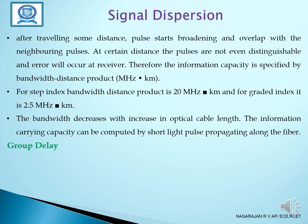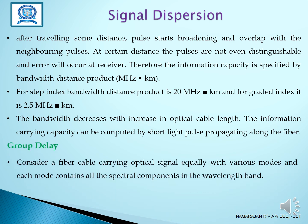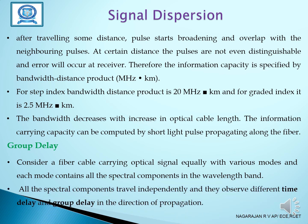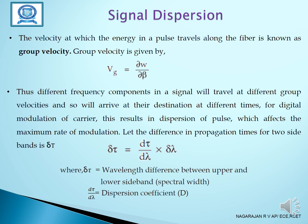Group delay: a fiber cable carrying an optical signal equally with various modes, where each mode contains all the spectral components in the wavelength band. All the spectral components travel independently and they experience different time delay and group delay in the direction of the pulse. The velocity at which the energy in a pulse travels along the fiber is known as group velocity. Different frequency components in a signal will travel at different group velocities and arrive at the destination at different times for digital modulation of carriers.